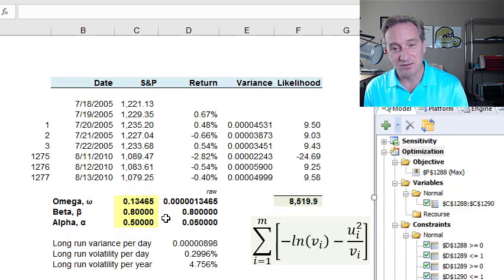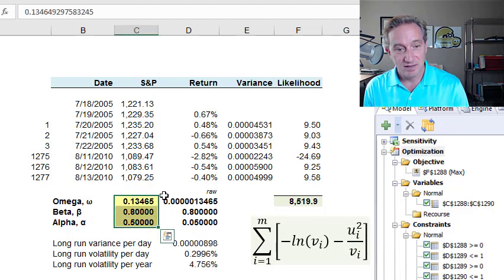And then we're telling solver here to find the set of these three parameters, alpha, beta, omega, that maximize this summation here, which is the likelihood function. Okay. So I've got that in here because in the meantime, I changed my values. And now I'm just going to let solver then find these values, which are the parameters in my GARCH 1.1 model that maximizes this summation, which is maximizes here, my likelihood function.